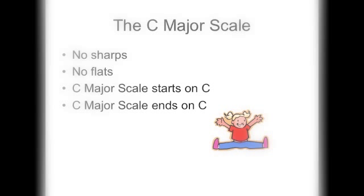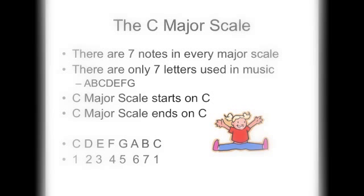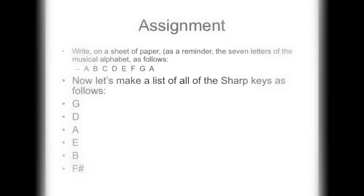The C major scale has no sharps and no flats. It begins on C and ends on C. C is note one, D is note two, E is note three, F is note four, G is note five, A is note six, B is note seven, and back to C again. Remember, there are only seven letters in the musical alphabet: A B C D E F G. Seven notes — every major scale.